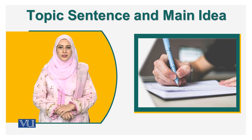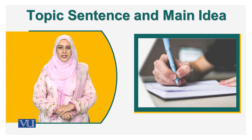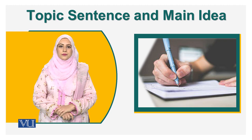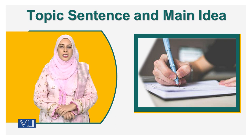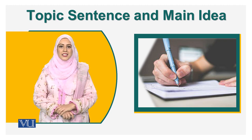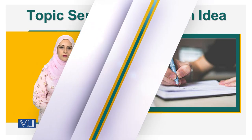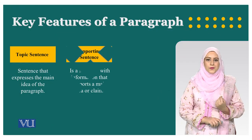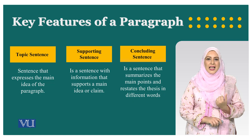Whenever we are writing, either we are doing academic writing or we are doing creative writing, we give our information in the form of a paragraph. There are basically three components of a paragraph: the first one is topic sentence, supporting sentence, and a concluding sentence.